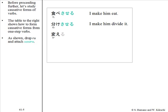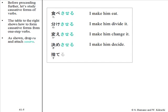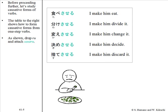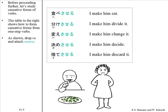Further one-step verb examples: 変える becomes 変えさせる, 決める becomes 決めさせる, 捨てる becomes 捨てさせる. In past tense: 食べさせた.